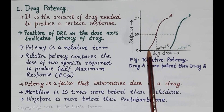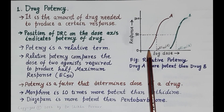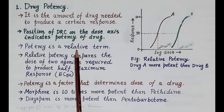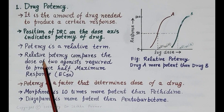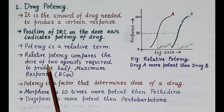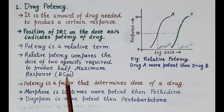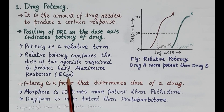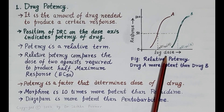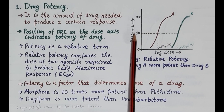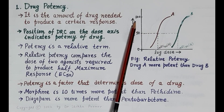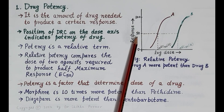Drug A is more potent than Drug B since a lesser quantity of Drug A is required to produce the response compared to Drug B. Potency is a relative, comparative term. Relative potency compares the dose of two agonists required to produce half-maximal response, where EC50 (effective concentration 50) is the concentration or dose of drug required to produce 50 percent of the response.